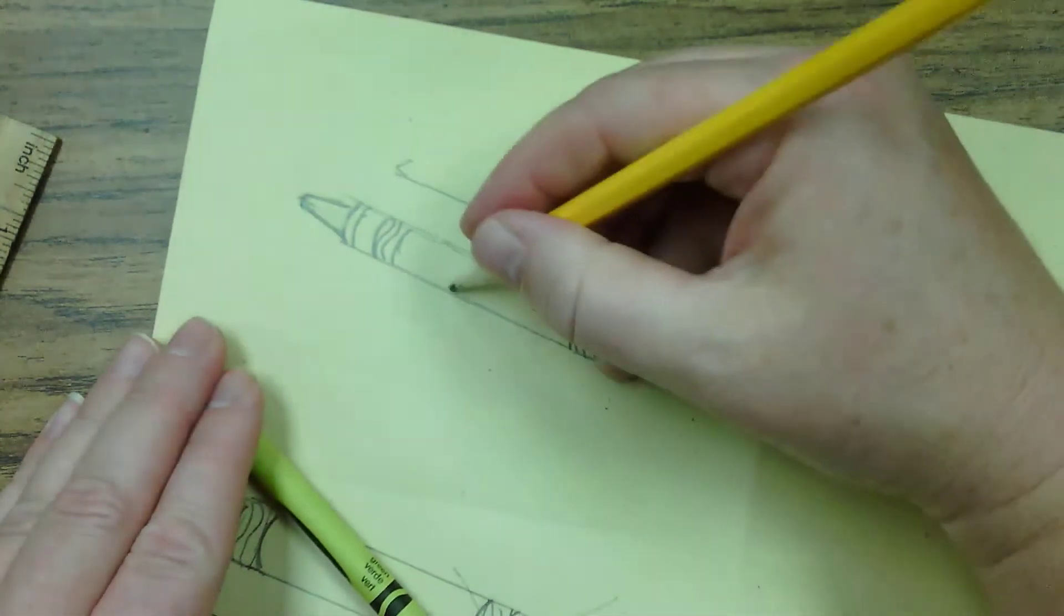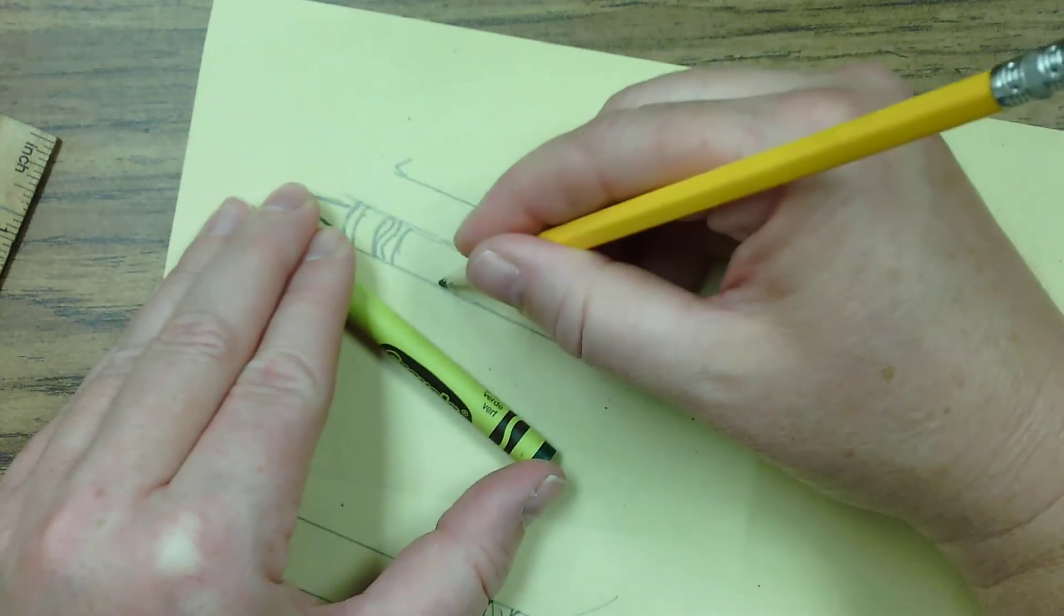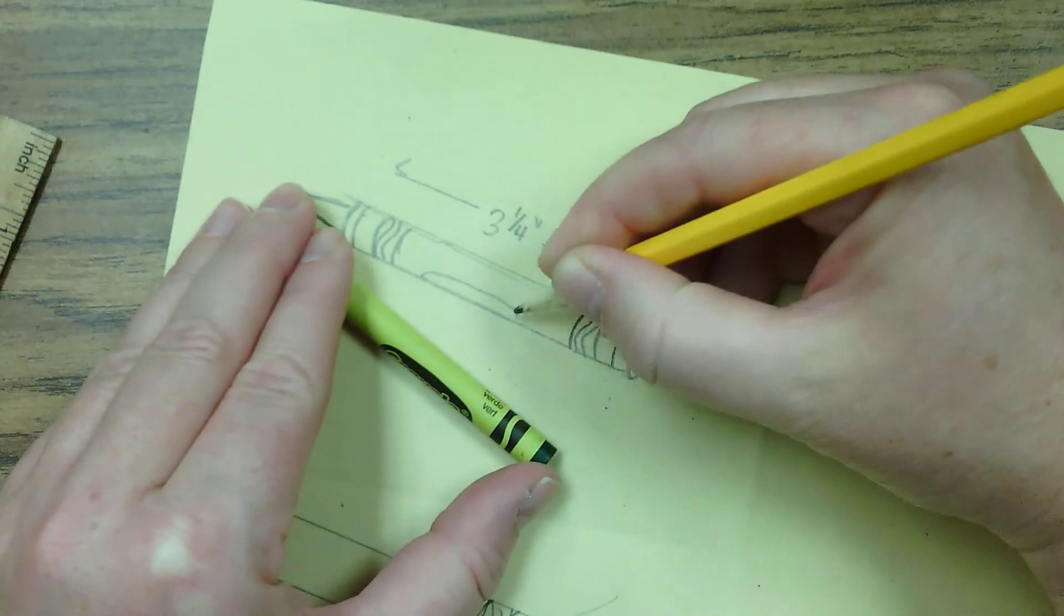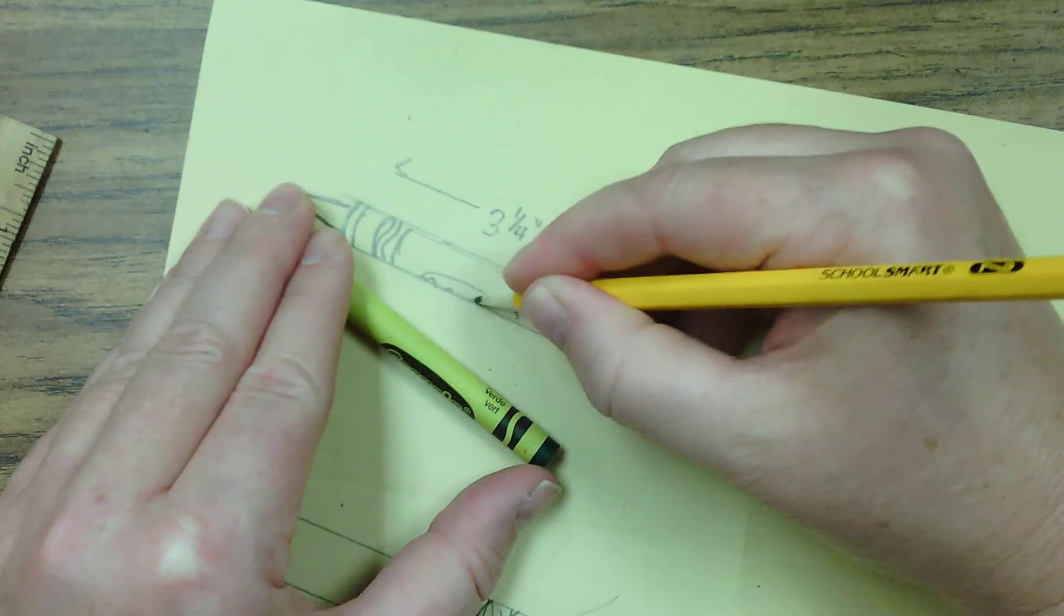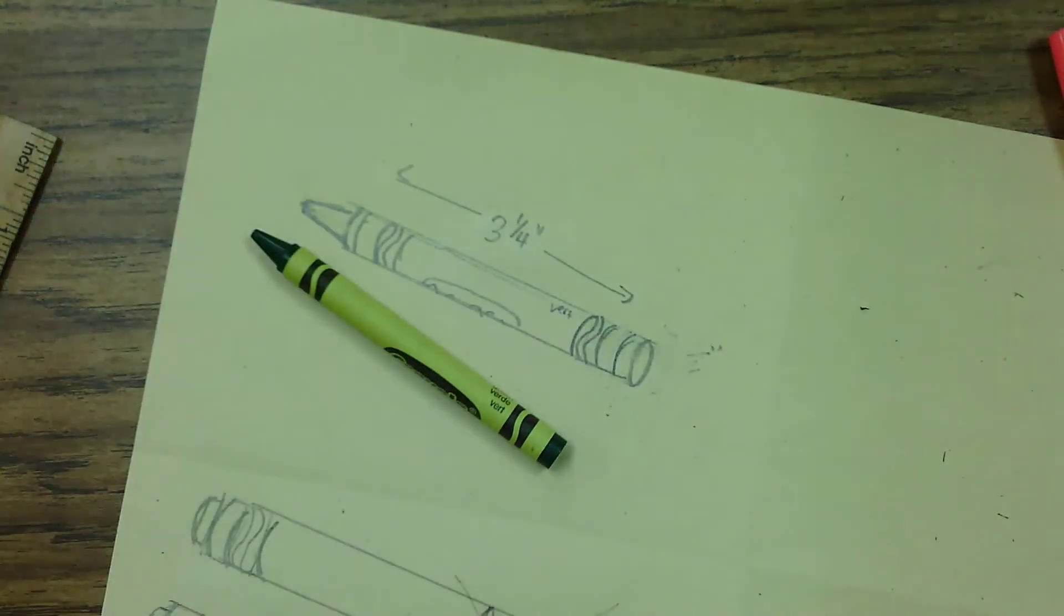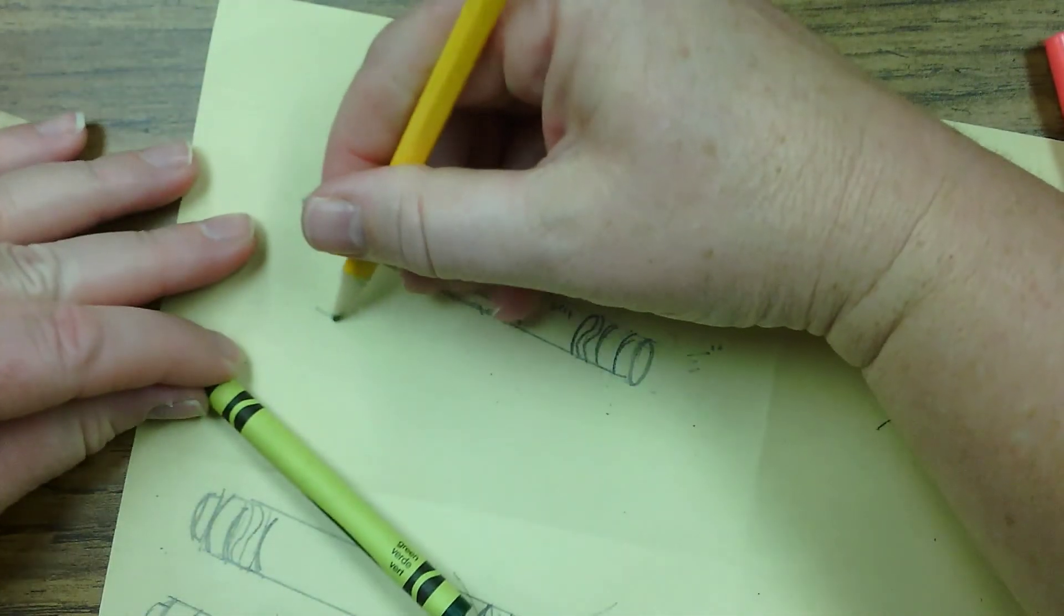And then we're going to draw the little squiggle lines in the stripe. And it's up to you how much more you want to add to your crayon. If you want to do the Crayola wording, you can do that. You don't have to do this part. If you just want to add in the name of the crayon, it's up to you.